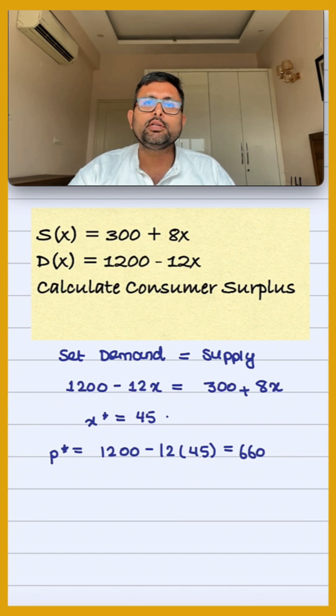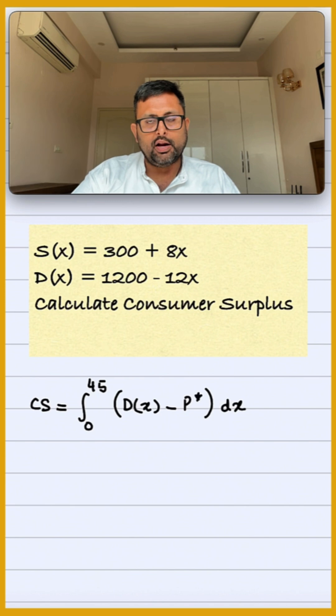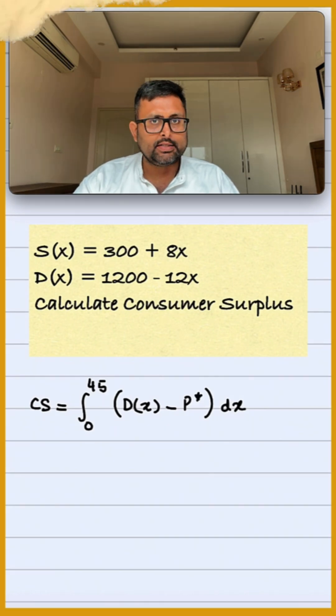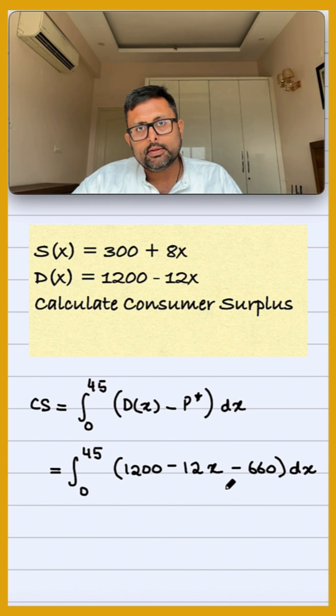Now we calculate consumer surplus using integrals. Consumer surplus is given by the integral from 0 to the equilibrium quantity of demand function minus equilibrium price. Here we have the demand function 1200 - 12x minus equilibrium price 660.